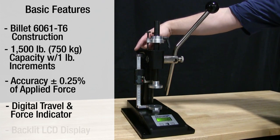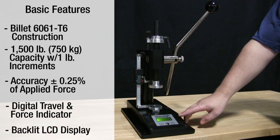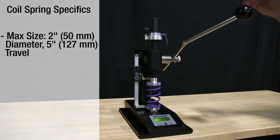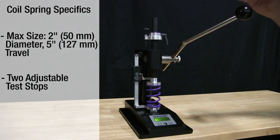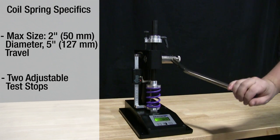The backlit LCD screen makes it easy to use indoors or in low light. The tester can accommodate springs up to two inches in diameter with a maximum travel of five inches.